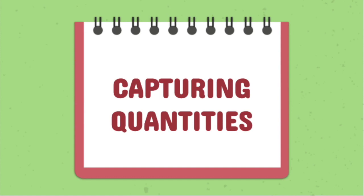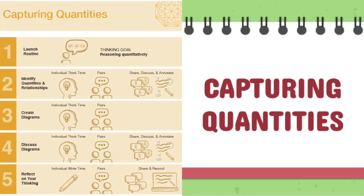The next routine I want to show you is called Capturing Quantities. In this routine, you launch your problem, and the goal is reasoning quantitatively. You are really focusing on identifying quantities and relationships within a problem. You share, discuss, and annotate the problem. Then in step three, you create diagrams — showing arrows and symbols, things that represent the process and operations that represent connections between different quantities given in the problem. After the diagrams are created, you discuss the diagram and then solve and reflect on your thinking.